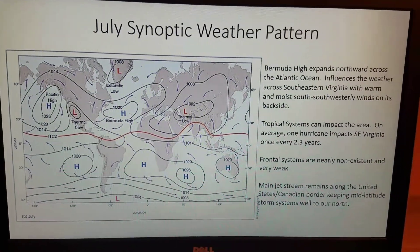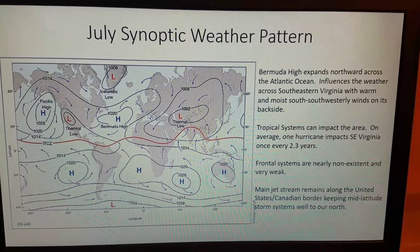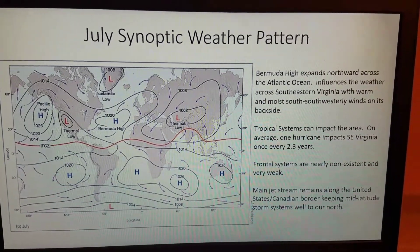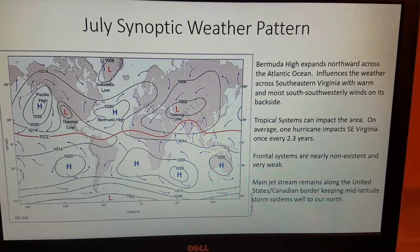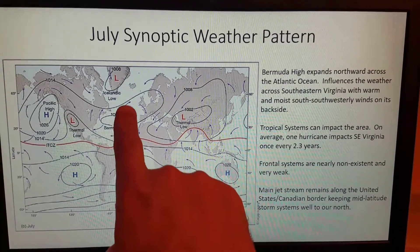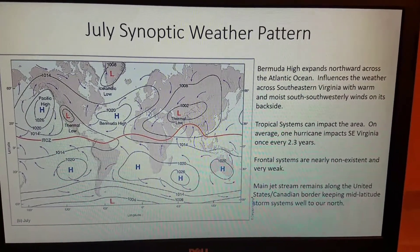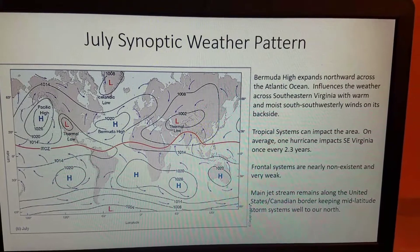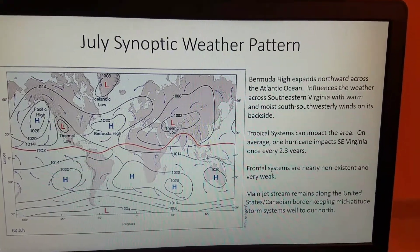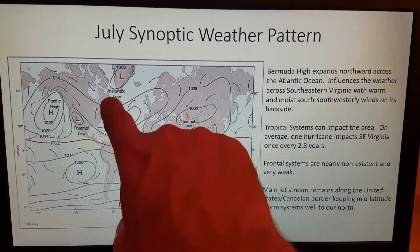And this Bermuda High with its clockwise flow tends to steer those systems in the tropical easterlies westward and also northwestward off the east coast.